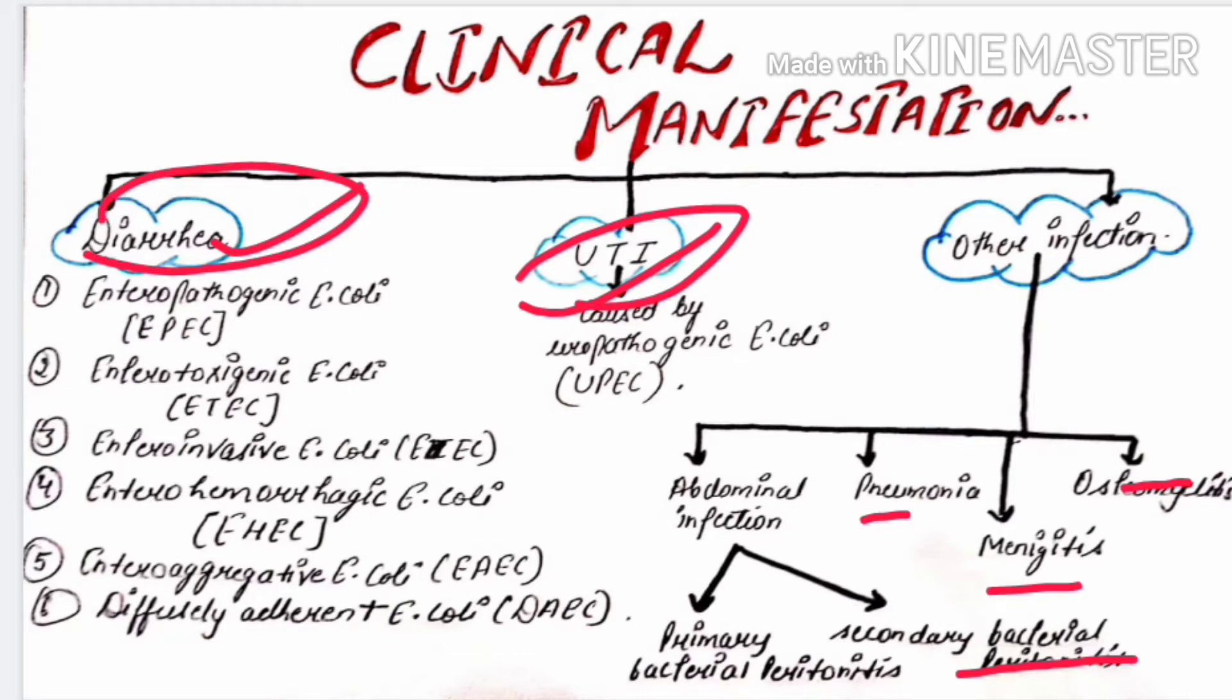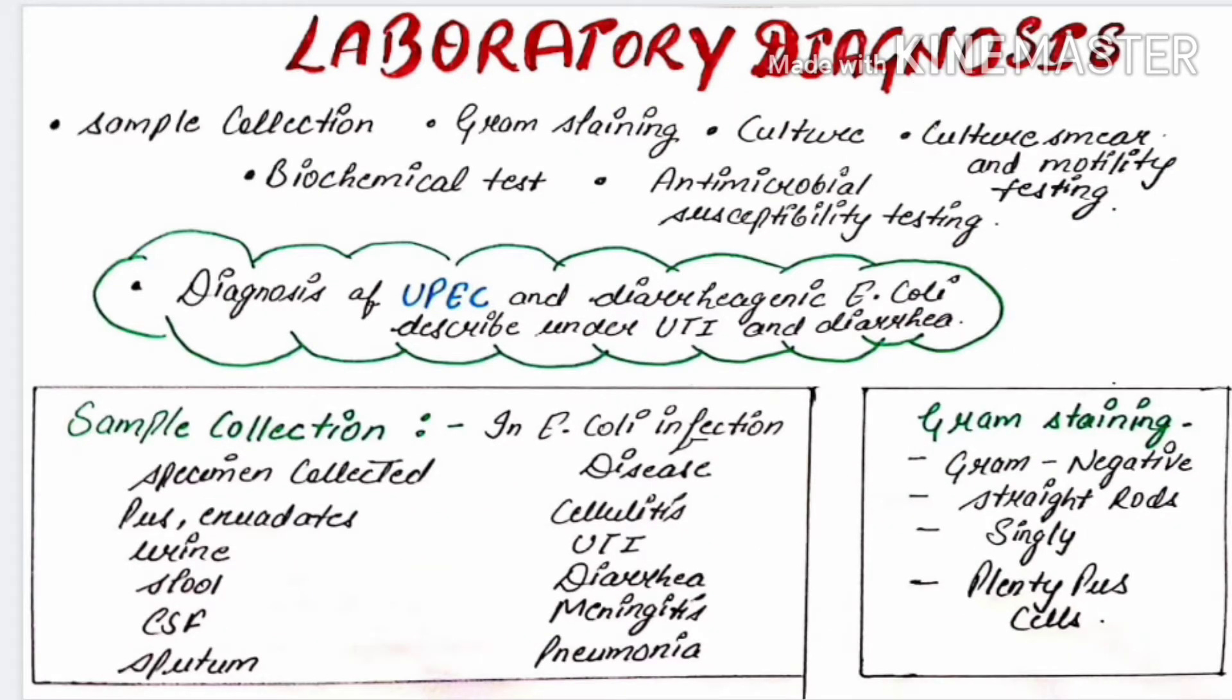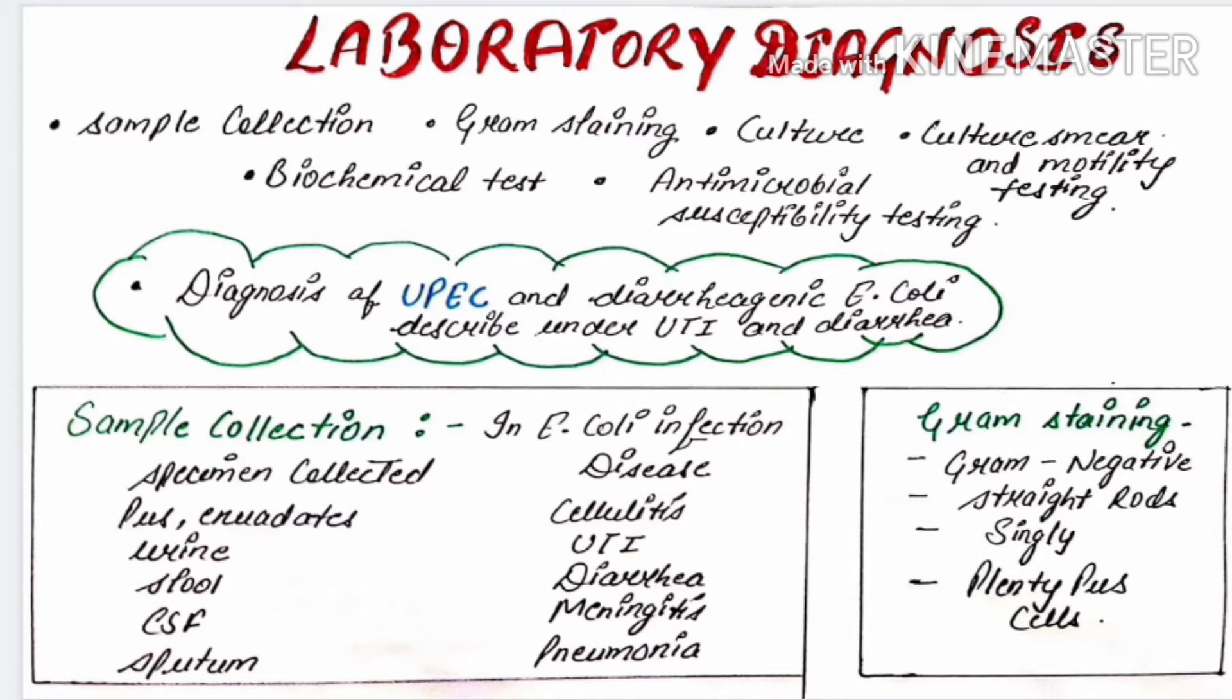We will study these two diagnoses in part 3 and part 4. Now, what we are covering is the general laboratory diagnosis of E.coli. Here is the laboratory diagnosis given. What we study in laboratory diagnosis is sample collection, gram staining, culture media, motility testing, biochemical test, and antimicrobial susceptibility testing.